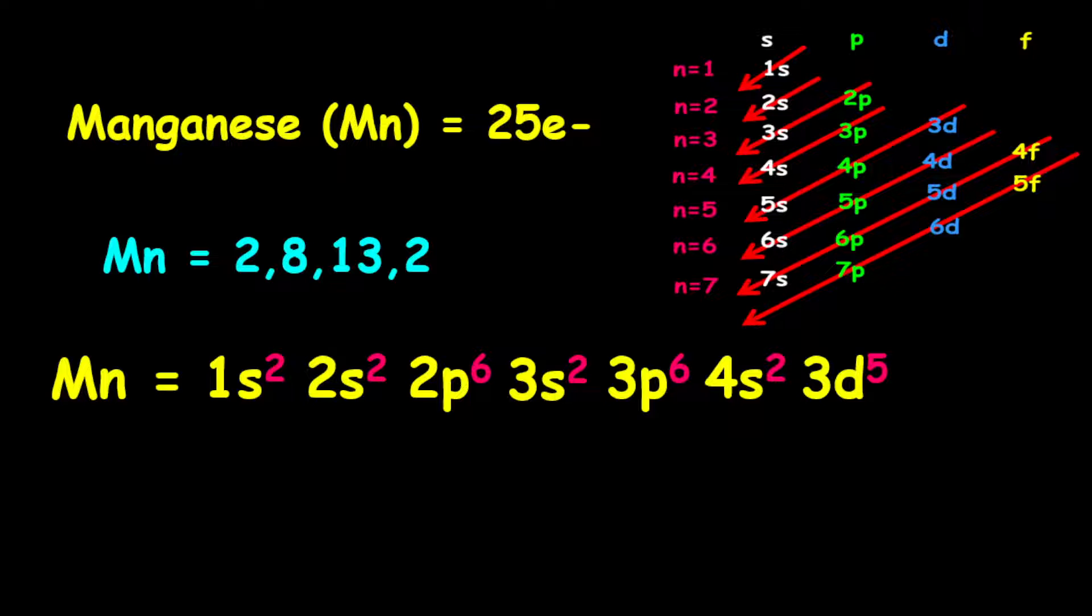Notice on the third shell, we have a total of 13 electrons. Therefore, the 3s, the 3p, and the 3d orbitals, they are all found on the third shell.